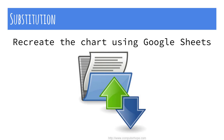The lowest level of the SAMR model shows us that the tech tool just replaces the pen and paper, or the original tool. While creating a chart on a spreadsheet is a great skill to have, students would be basically copying data.